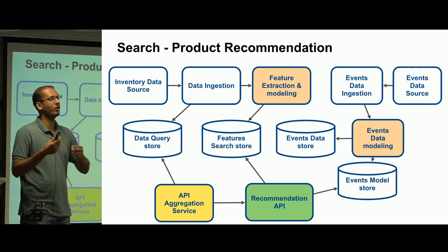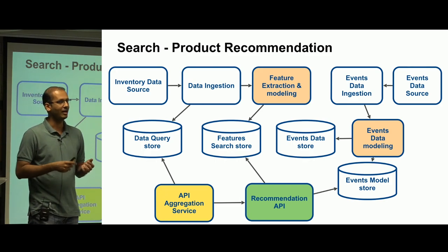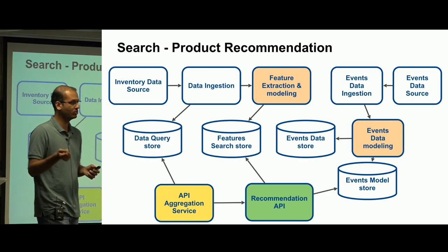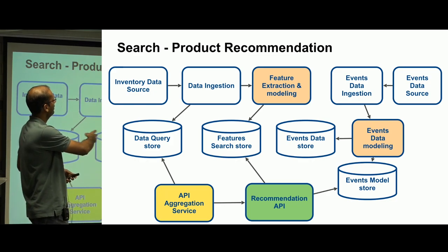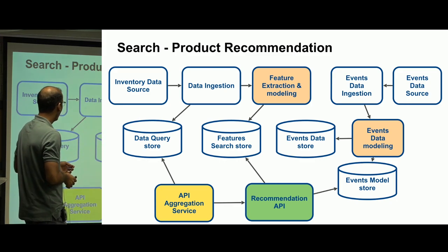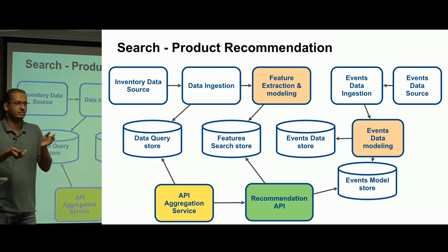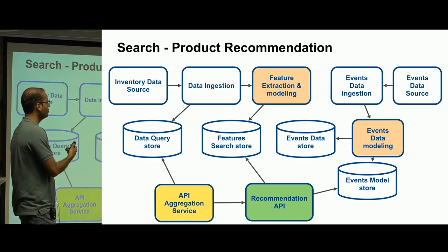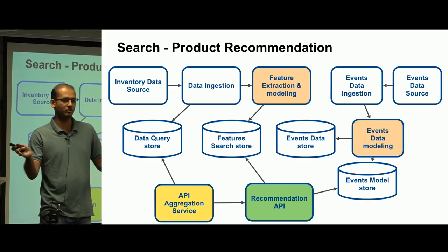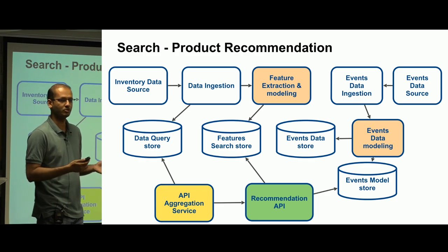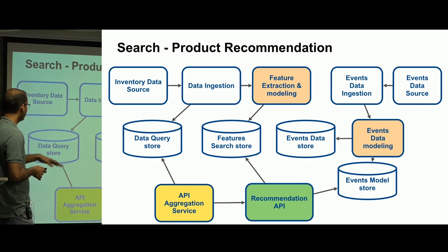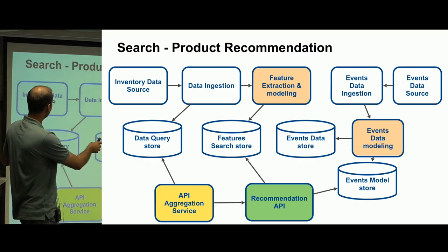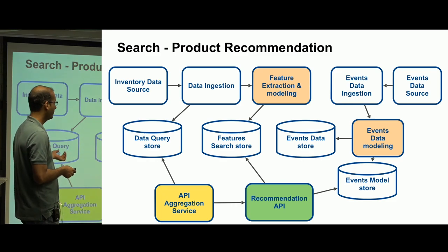You can also use event information — which product someone viewed, what they bought — as signals for recommendations. That's a structured event stream flowing into the system, and event data modeling is done on it. An event store is like tweets — hundreds of millions of records — so it makes sense to use a key-value store. You can use RDBMS but for horizontal scaling, key-value is better. The API hits a service going to a different search store; a pipeline pushes data to different stores and results are served.